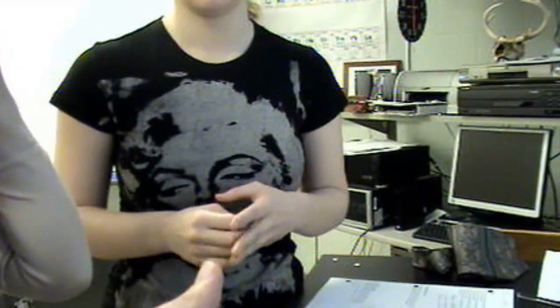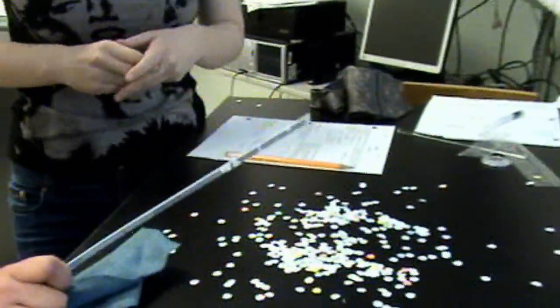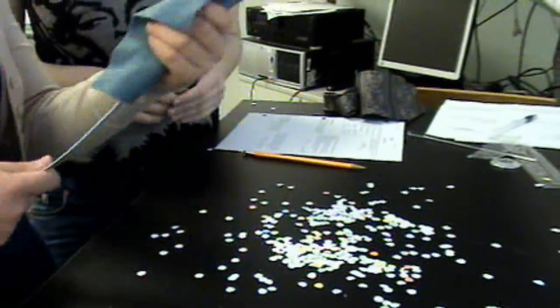So electrons come off the ruler and go onto the paper, making the paper negative all over. And then they repel - the negative charge repels the negative charge, and they fly away. So let's see that again.